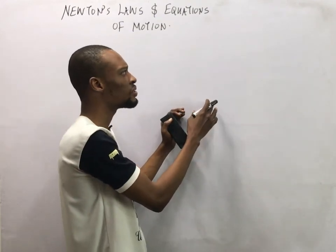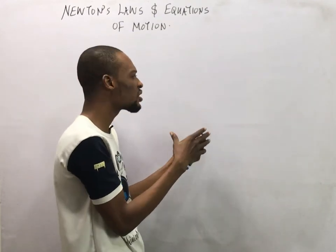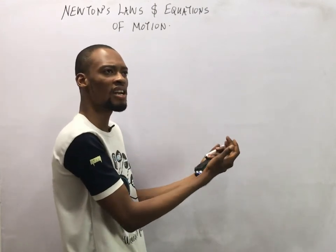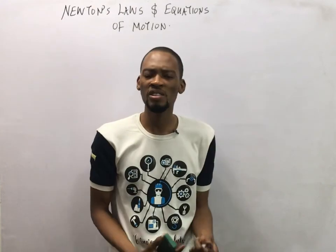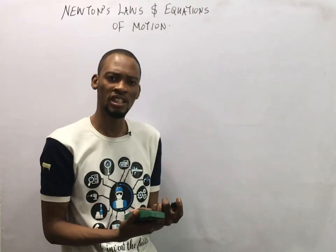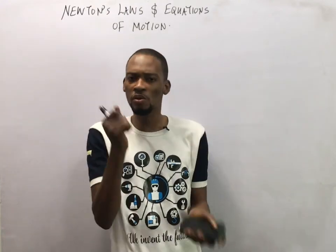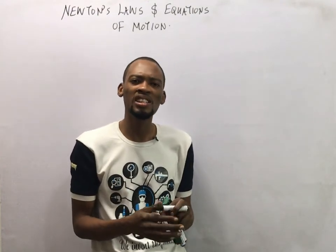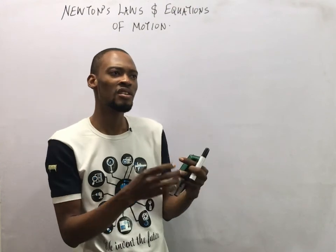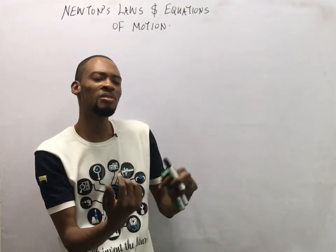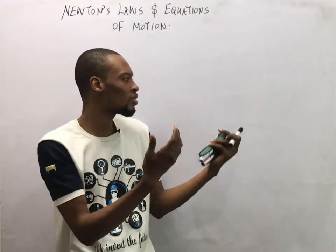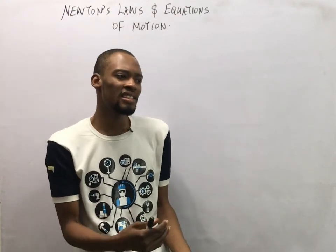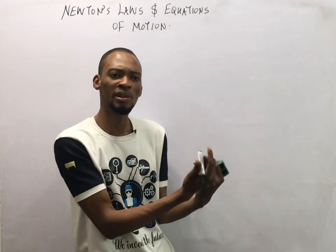As this object is resting now, it will continue to be there until you disturb it — until a force acts on it. If you are launching a rocket to the moon, for example, it continues to go, bypassing the Earth's gravity, until it encounters some forces and begins to change direction or stop. A rolling ball will continue to roll until it experiences a force that will stop it.